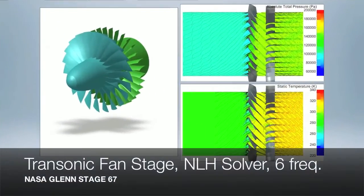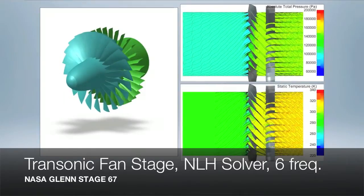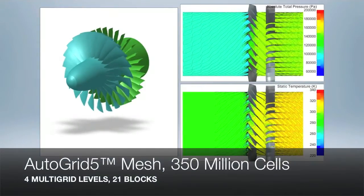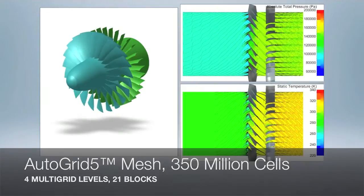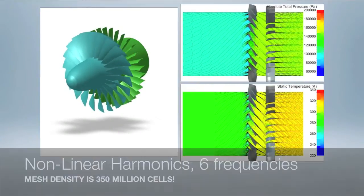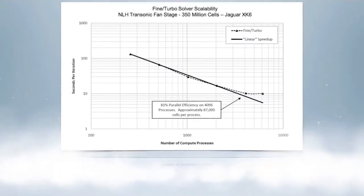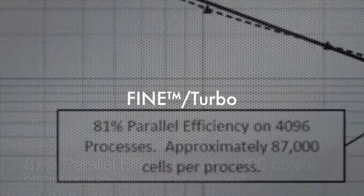Another interesting study is the unsteady solution of a transonic fan stage. The mesh size is 350 million cells. Solving nonlinear harmonics at six frequencies makes this problem truly challenging at HPC scale in terms of memory management. Performance numbers show near-linear parallel scalability distributed on more than 4,000 cores.